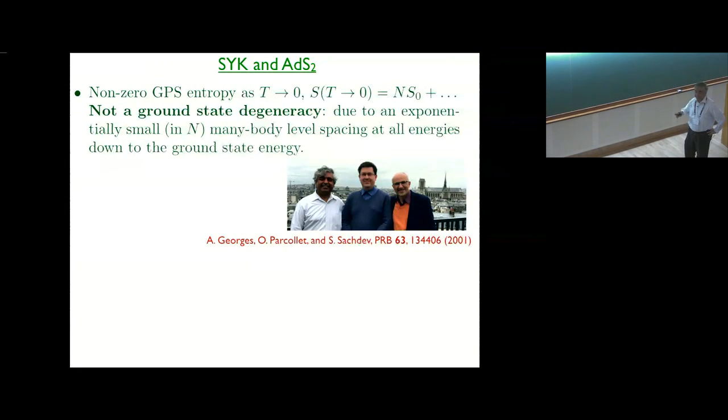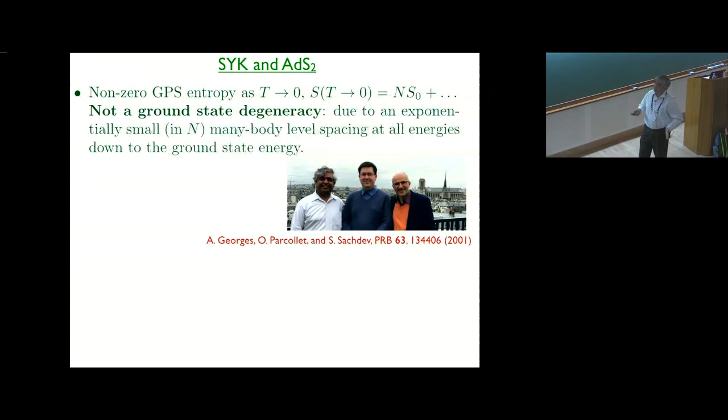Another system that has a finite ground state entropy is Pauling's ice model. However, there's a very important difference between that entropy and this entropy. Pauling's ice entropy is immediately lifted no matter what perturbation you add to the system. It immediately goes to zero. This is not of that type. This is actually very robust. You can add lots of interactions, these are all random couplings, you will always get the same entropy. So it's a very robust entropy and a seeming violation of the third law of thermodynamics.